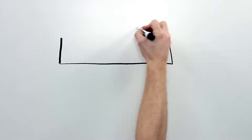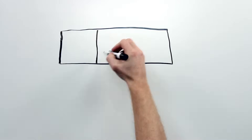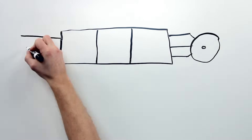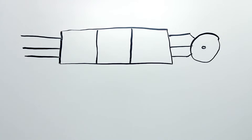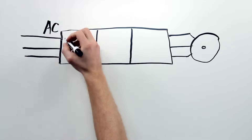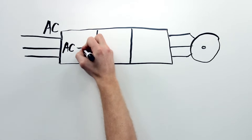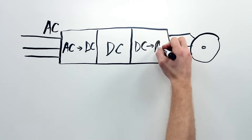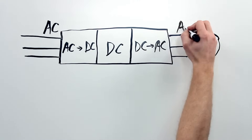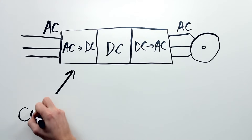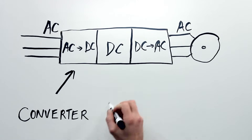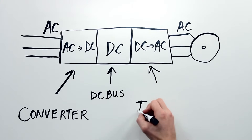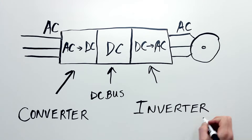Inside of a drive, it can be broken up into three main parts. The AC power from the utility enters the drive and is converted from AC into DC. Then the DC is carried over and converted from DC back into AC. These three parts are called the converter section, the DC bus, and the inverter section.